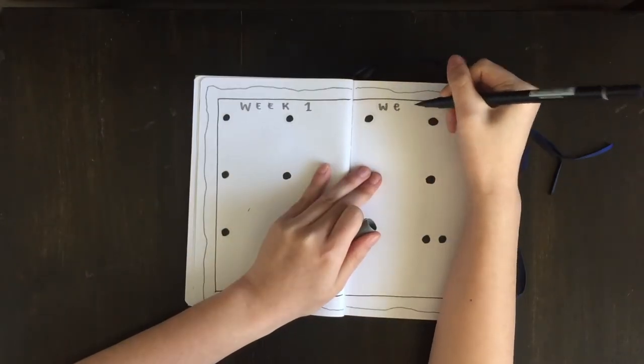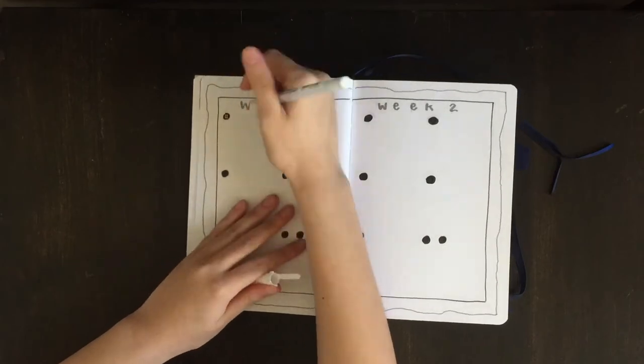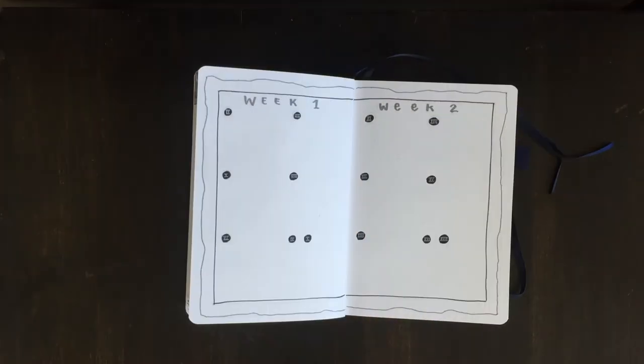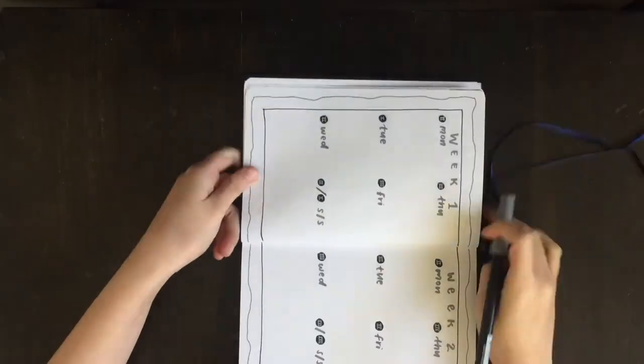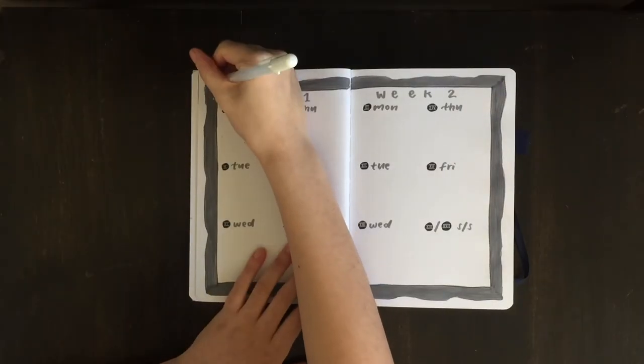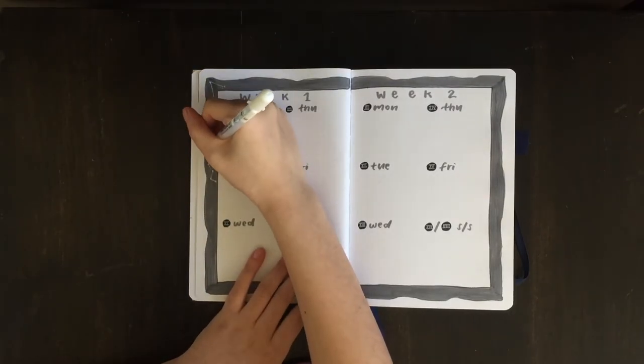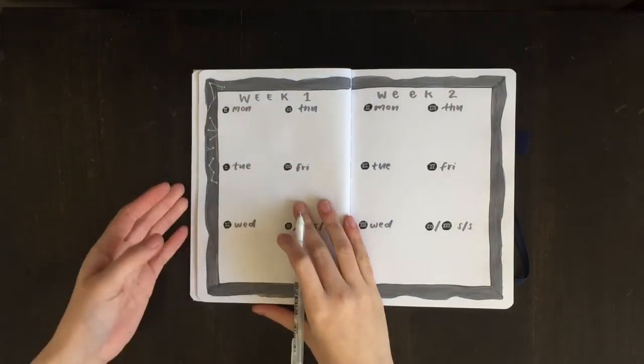Next, I'm writing out week one and week two on their respective sides of the page, and then I'm using black circles and writing in Roman numerals next to each day of the week. I thought that would fit really well with the theme because this gives me kind of older dark academia vibes which I think Roman numerals fit perfectly with.